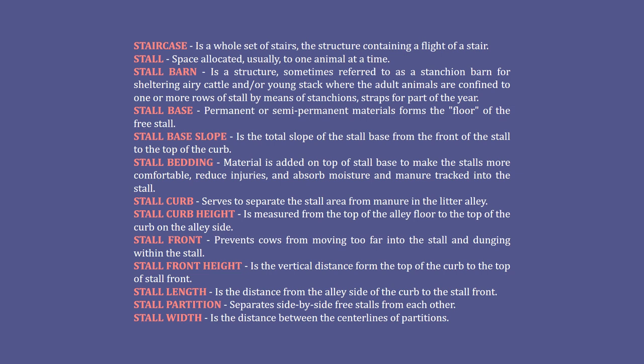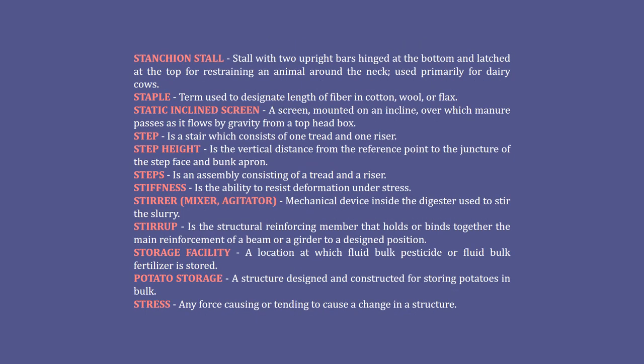Stall front height: the vertical distance from the top of the curb to the top of the stall front. Stall length: the distance from the alley side of the curb to the stall front. Stall partition: separates side-by-side free stalls from each other. Stall width: the distance between the center lines of partitions. Stanchion stall: a stall with two upright bars hinged at the bottom and latched at the top for restraining an animal around the neck — used primarily for dairy cows.